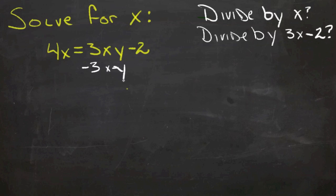So what if we subtracted this from over here, 3xy, and subtracted 3xy from over here? Then we'd have 4x minus 3xy on the left and negative 2 on the right. Then we could reverse distribute, factor this x out of both of these terms.